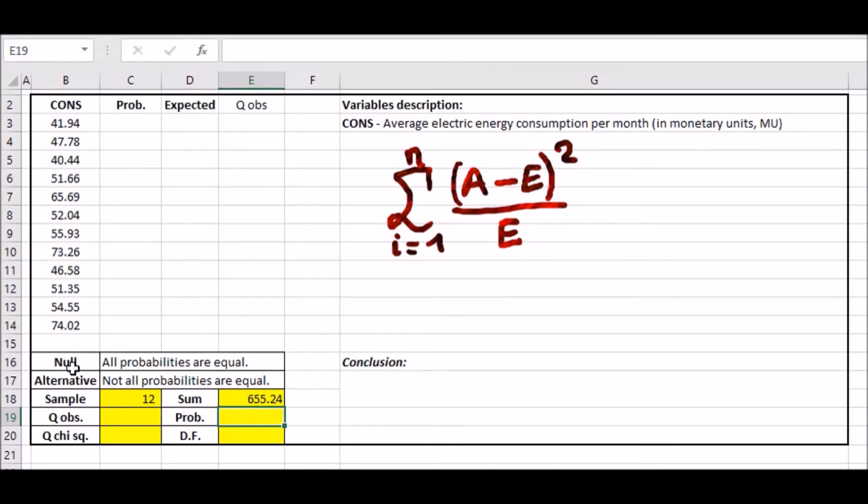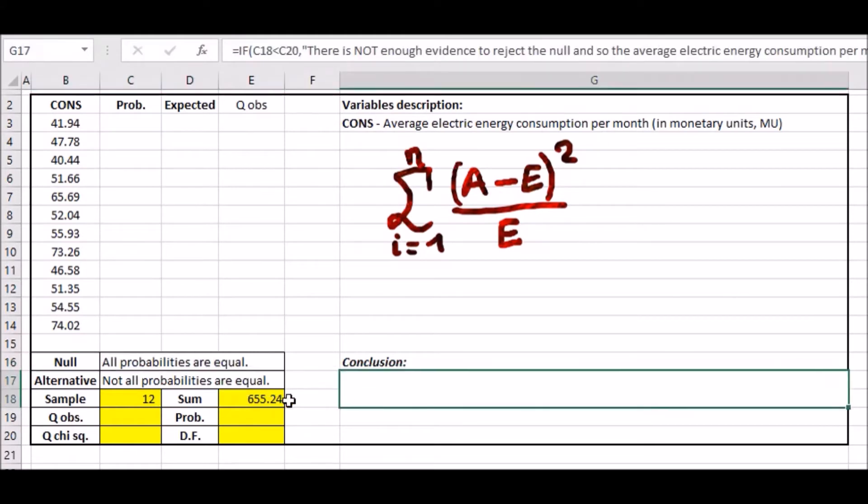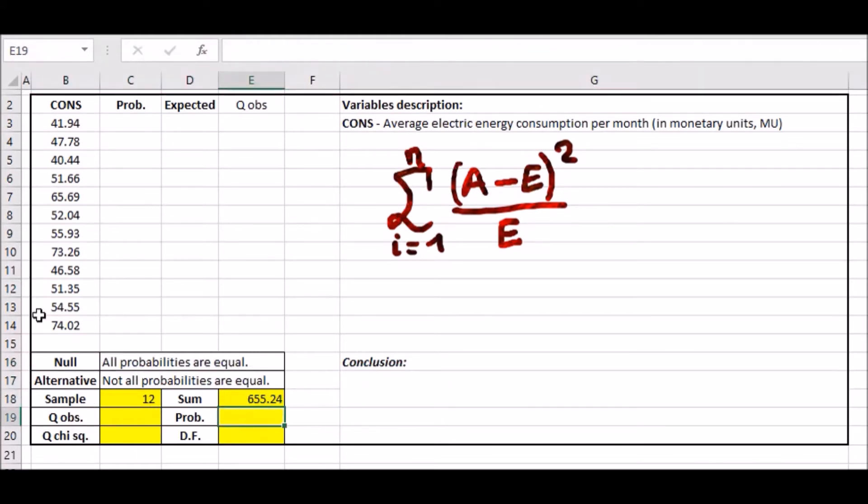I've set a null and alternative hypothesis. The null is that all probabilities are equal, and the alternative meaning not all probabilities are equal. We're going under the assumption of the null. Since all probabilities are equal and we have 12 variables, each probability must have 1 over 12. You can say equals 1 over this variable and stretch it out.